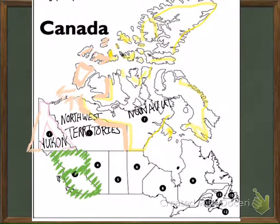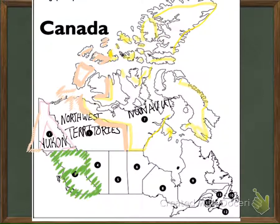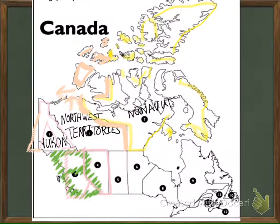Continuing on, now with the provinces — start with the west coast. The first one looks like a B, and stands for British Columbia. Next to it, north of Idaho, you have part of a letter A. The other part is covered up by British Columbia. You have an A for Alberta.